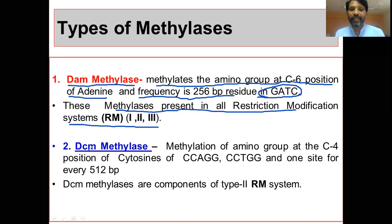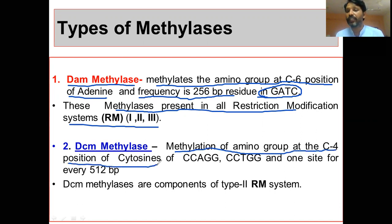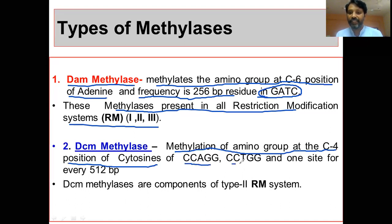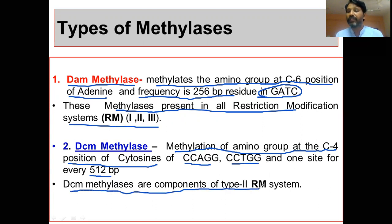The second category is DCM methylases — D-C-M. Here C stands for cytosine, so methylation occurs at the C-4 position of cytosine. They are also site-specific, with the recognition sequence C-C-A-G-G / G-C-T-G-G. The frequency of these methylation sites is every 512 base pairs. DCM methylases are components of the type 2 restriction modification system, so DCMs are restricted to the type 2 modification system.